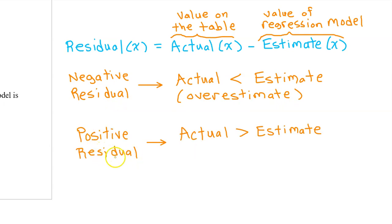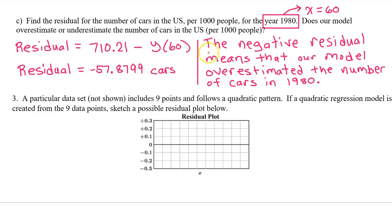A positive residual indicates that the actual value is greater than the estimate. In other words, the estimate is less than the actual value. So a positive residual indicates an underestimate. In this case, the negative residual means that our model overestimated the number of cars in 1980.